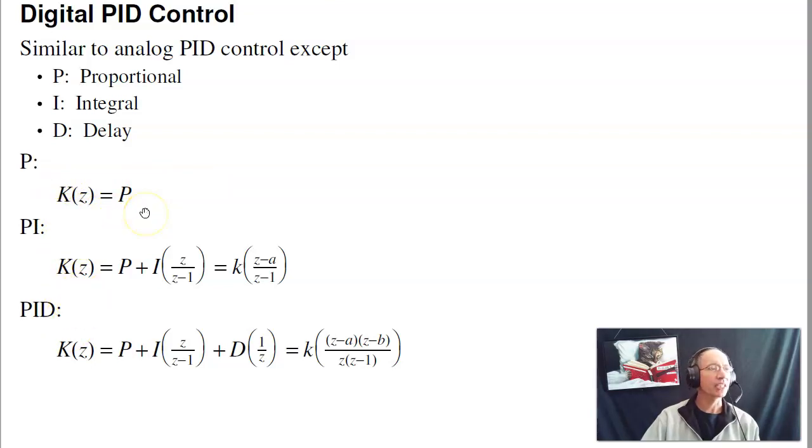A P controller is just a gain compensator. That's like what we did in our last lecture. PI has the proportional and integral term. Put that over a common denominator, and what you wind up with is I've got a pole at plus one. That's dc. That makes it a type one system. I can put a zero anywhere I want and add a gain k.